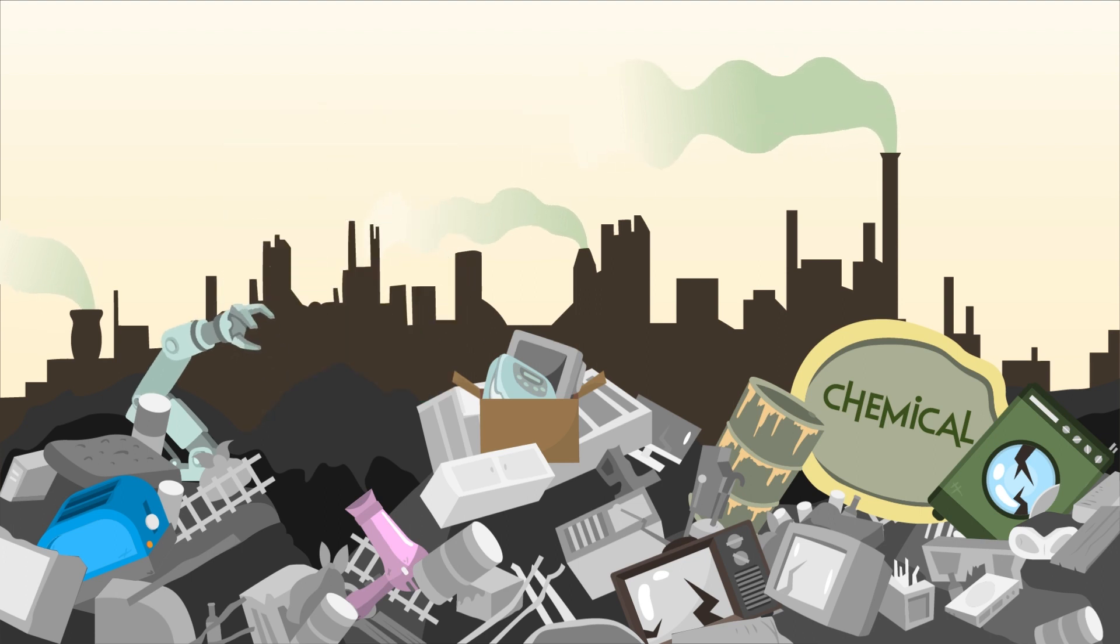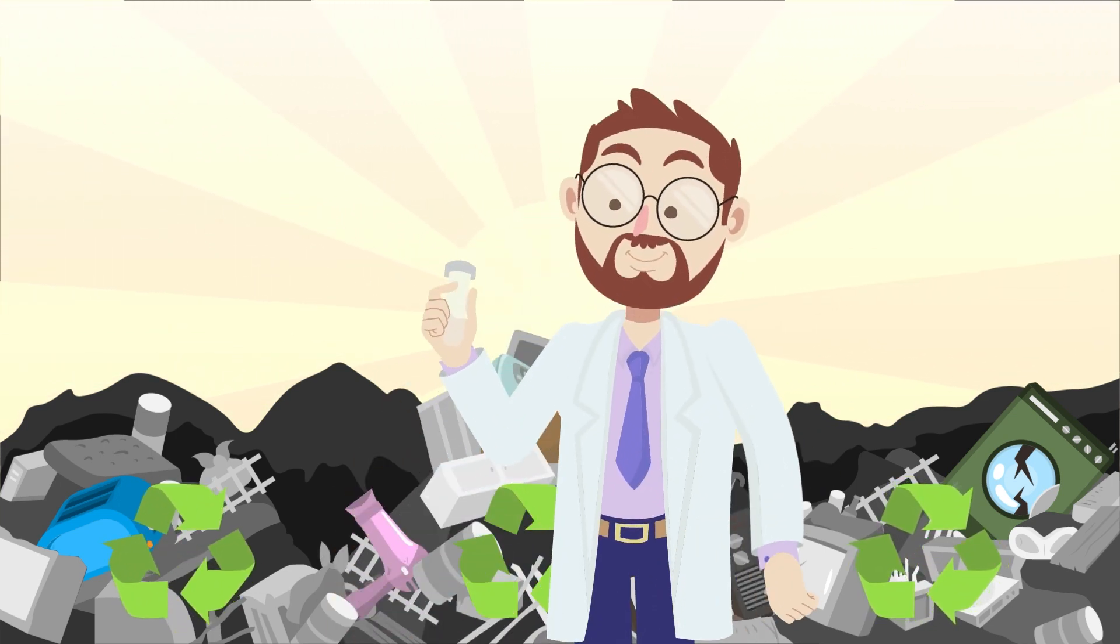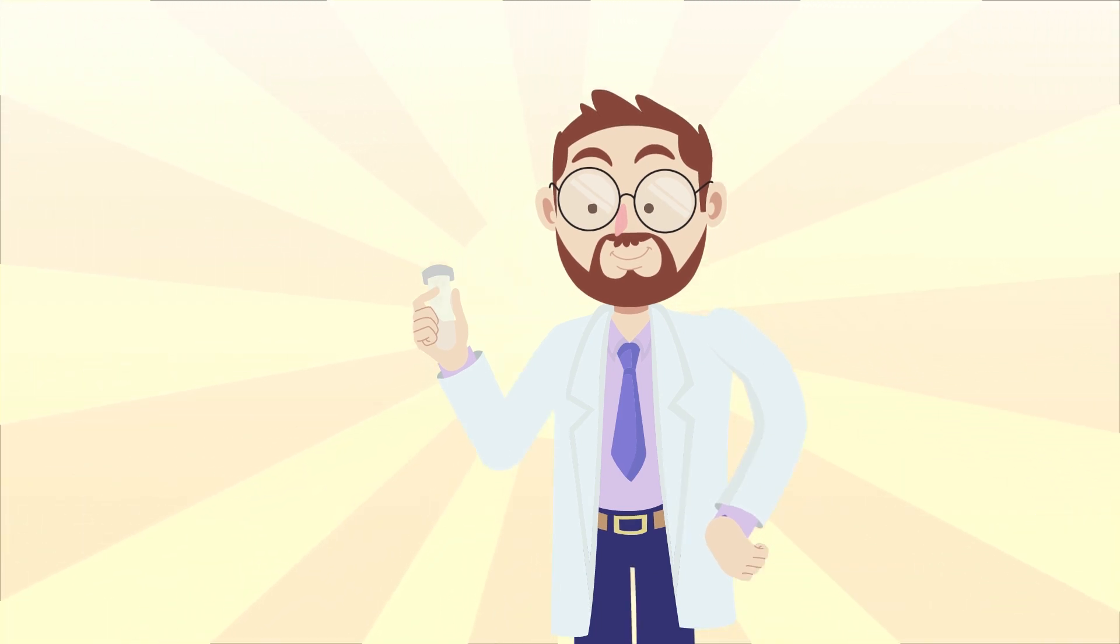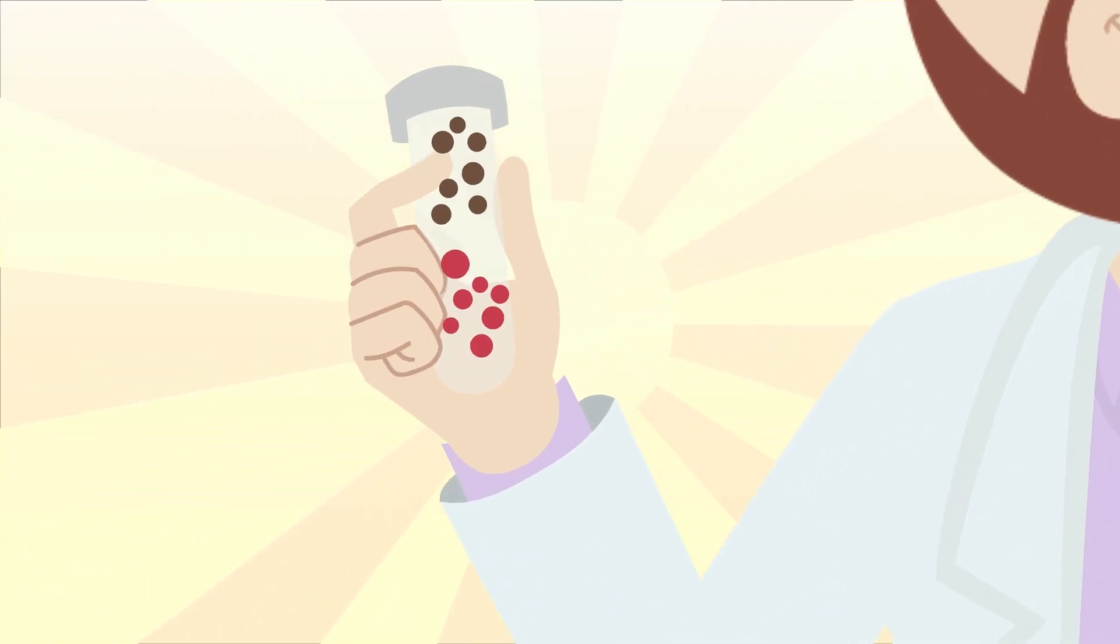But what if that junk was instead made of a material that could be easily recycled and repurposed? Sustainable manufacturing needs smarter materials, which is why researchers at Flinders University have been developing one. So what's this new material and how could it be used?